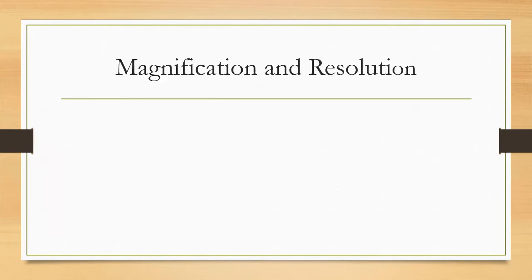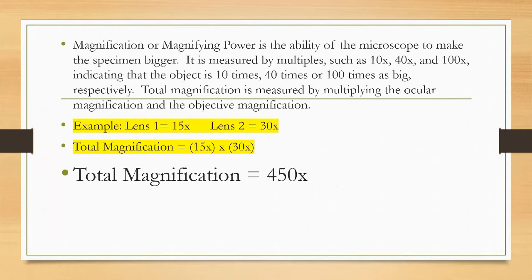Magnification or magnifying power is the ability of the microscope to make the specimen bigger. It is measured by multiples such as 10x, 40x, and 100x, indicating that the object is 10 times, 40 times, or 100 times as big, respectively. Total magnification is measured by multiplying the ocular magnification and the objective magnification.